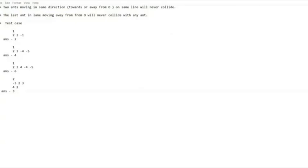The second point is the last ant in lane moving away from zero will never collide with any ant. This is just an extension of this statement. Let's say this is the grid and an ant is at position two, already collided with something and now moving away with nothing in front of it. Nothing is ever going to catch it because the speeds cannot be greater. Therefore this ant will just go towards infinity. This ant will never collide again.